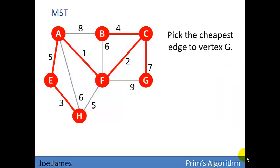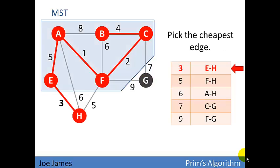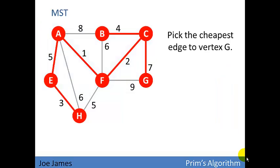Now pick the cheapest edge to vertex G, and you're done, which is seven. You can see at this point that there's only one vertex left uncovered. That's G. And there are two edges going to it, seven and nine. We pick the cheapest one at seven. So we'll take a shortcut here on the last vertex and say, we're going to pick edge seven to map vertex G. And that's our minimum spanning tree.